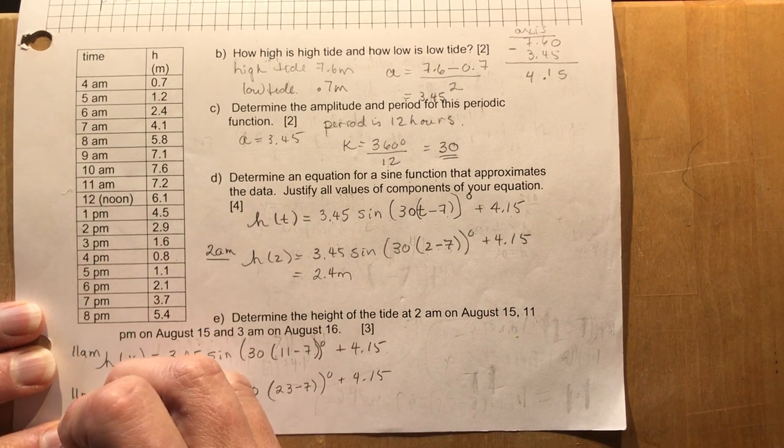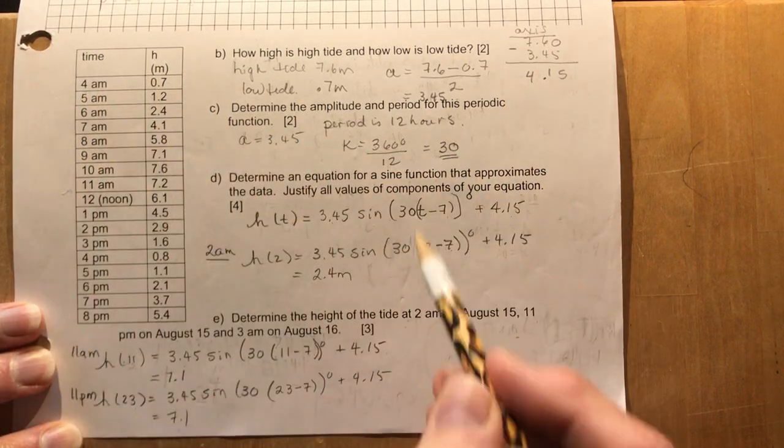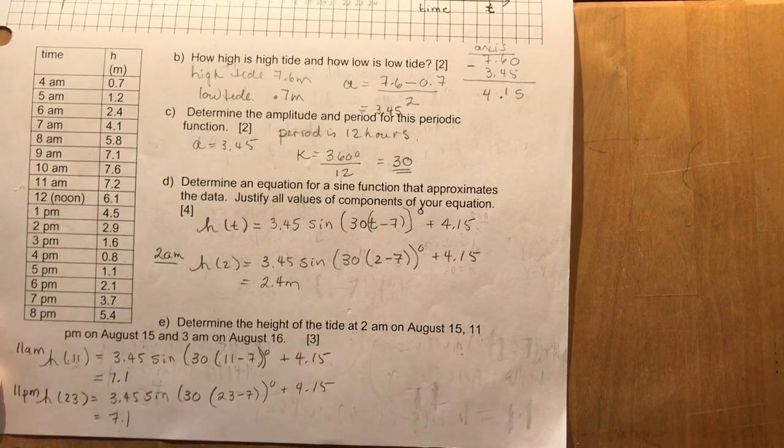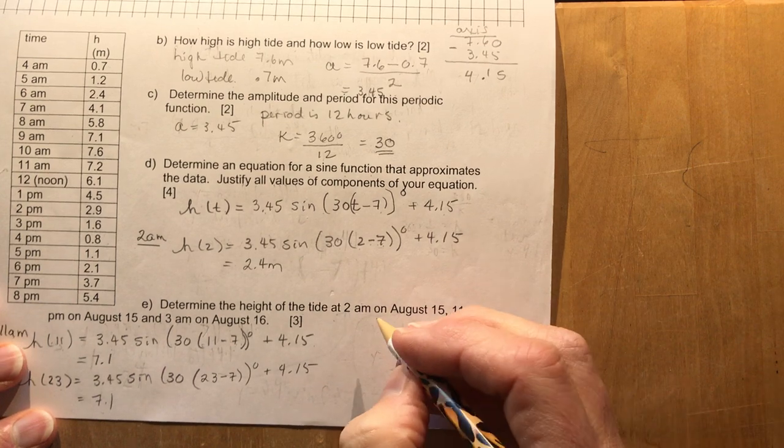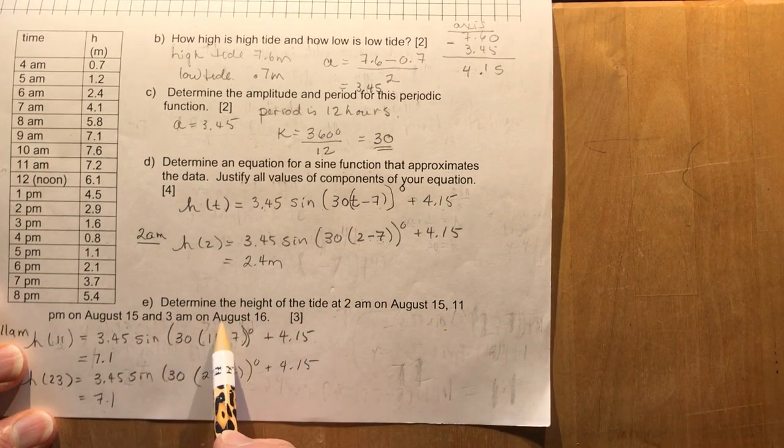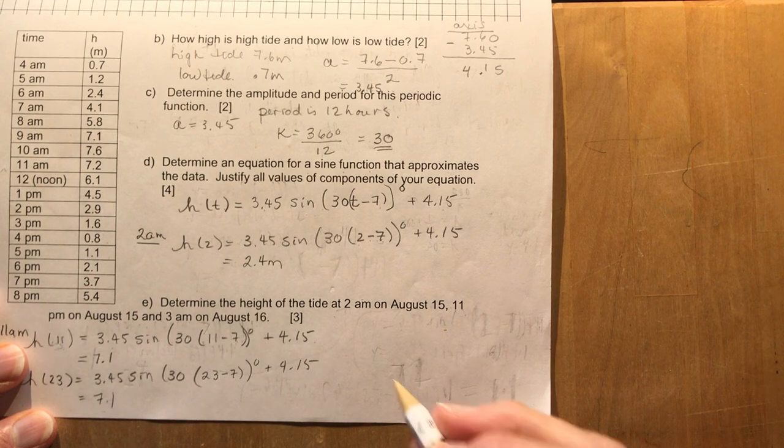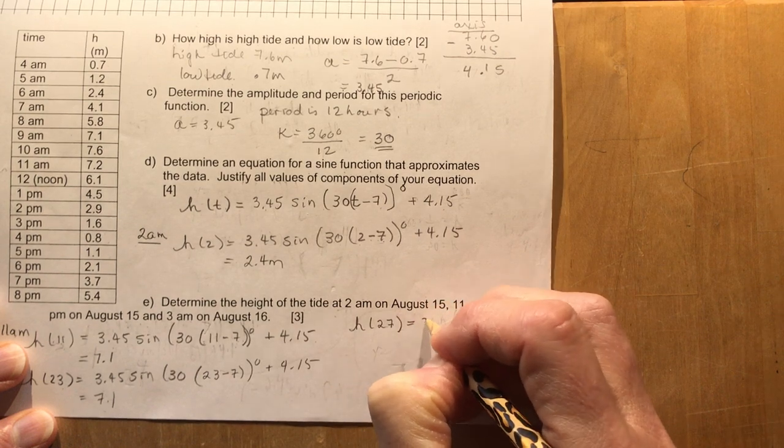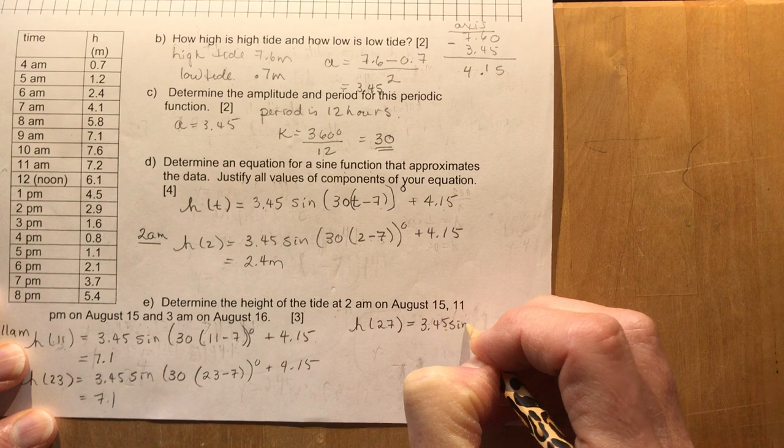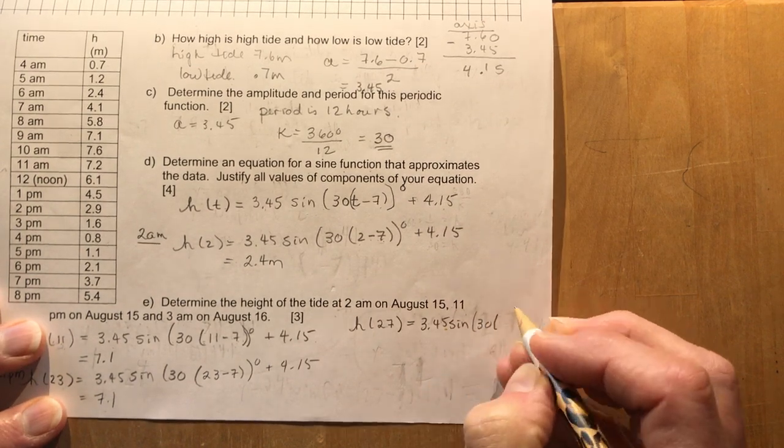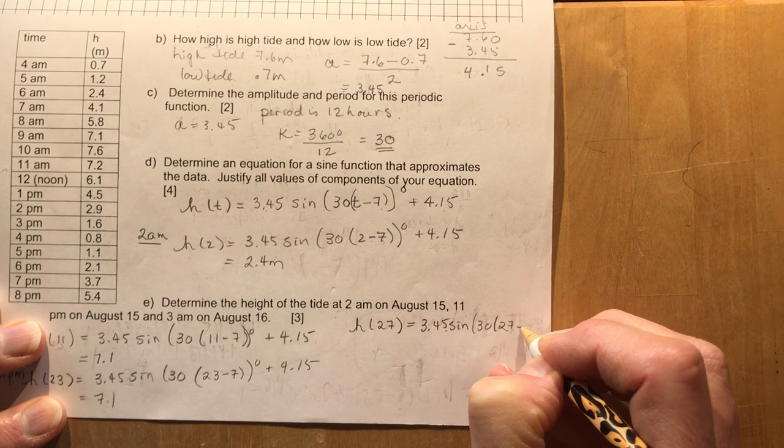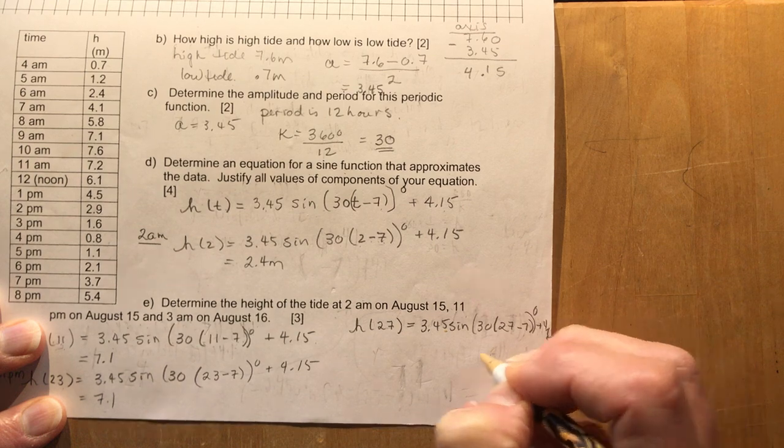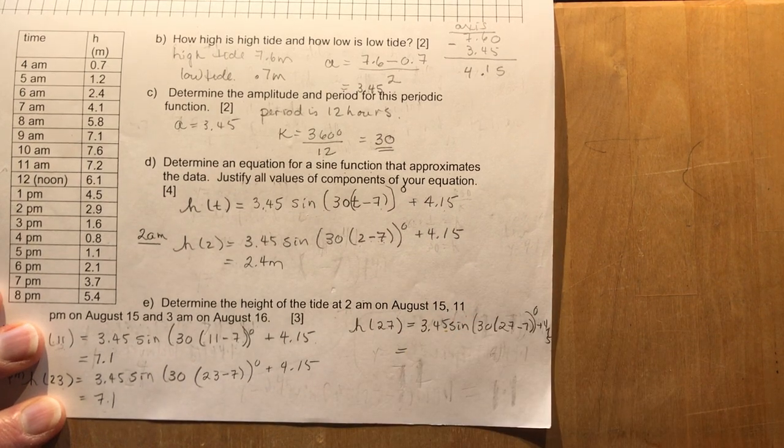3 AM on August 16th: that would be h at 27, so 24 hours plus 3 into the morning. You do the same calculation. I have 3.45 sine of 30 times 27 minus 7 plus 4.15, and that comes out to about 1.16.